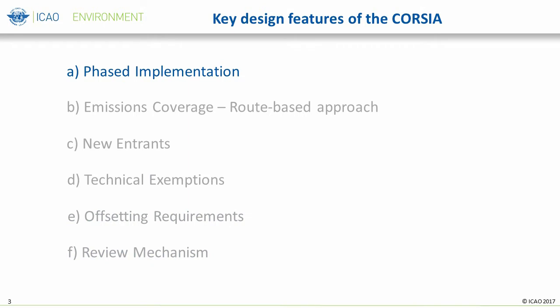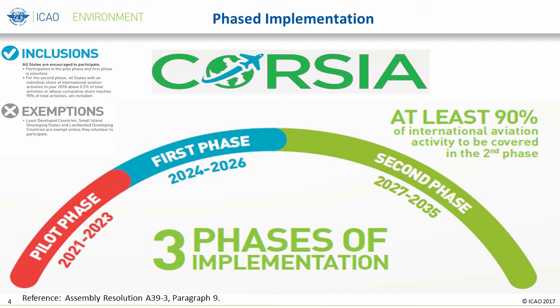We will start with the concept of phased implementation. Paragraph 9 of Resolution A39-3 states that CORSIA implementation will be conducted in a phased approach. The decision to use the phased approach was intended to accommodate the special circumstances and respective capabilities of states while minimizing market distortion. CORSIA starts with a pilot phase from 2021 through 2023, after which is the first phase from 2024 through 2026, followed by the second phase from 2027 through 2035. Each phase is a multiple of three-year terms, corresponding to CORSIA's compliance cycle of three years according to paragraph 16 of Assembly Resolution A39-3.